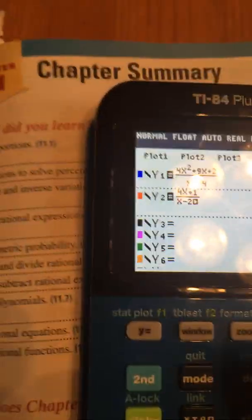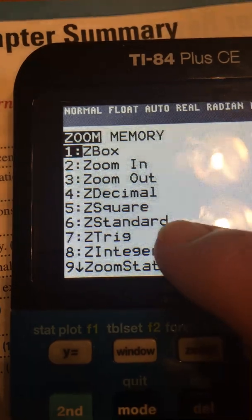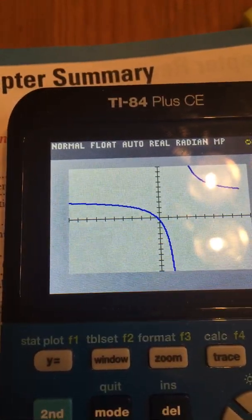And I know my window's messed up, because I know that's what I was doing. I was doing weird last time. So I'm going to go to zoom standard number 6, and hopefully I'll get a good graph. There it is.